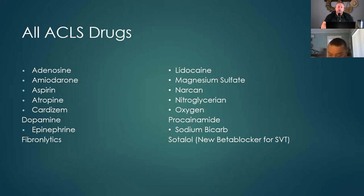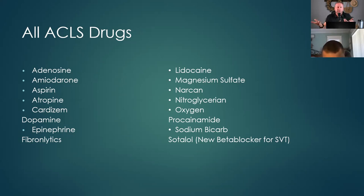Resistant V-fib or torsades de pointes — which I've never seen pre-hospital but you've probably seen it in the hospital. Nitro — in the field we give it sublingual as a spray. It used to be three sprays to a max dose of 0.12 milligrams. Now they're saying as long as the patient has pain and systolic blood pressure is above 90, we can give nitro until they're pain-free.